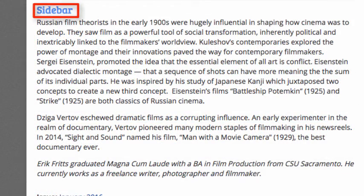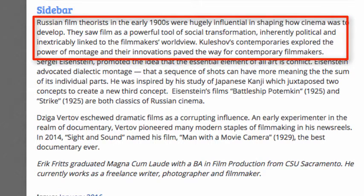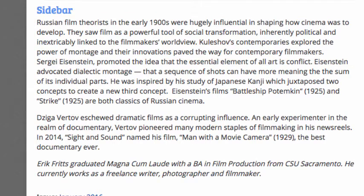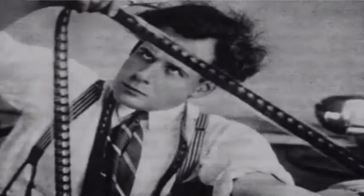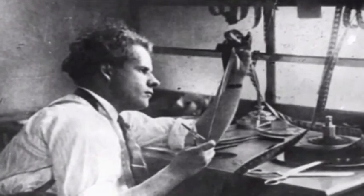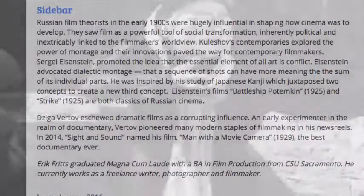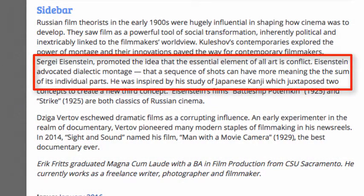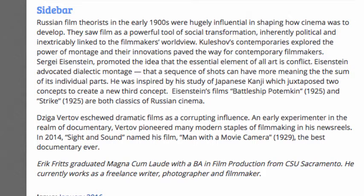Russian film theorists in the early 1900s were hugely influential in shaping how cinema was to develop. They saw film as a powerful tool of social transformation, inherently political and inextricably linked to the filmmaker's worldview. Kuleshov's contemporaries explored the power of montage and their innovations paved the way for contemporary filmmakers. Sergei Eisenstein promoted the idea that the essential element of all art is conflict. Eisenstein advocated dialectic montage — that a sequence of shots can have more meaning than the sum of its individual parts. He was inspired by his study of Japanese kanji, which juxtaposed two concepts to create a new third concept.